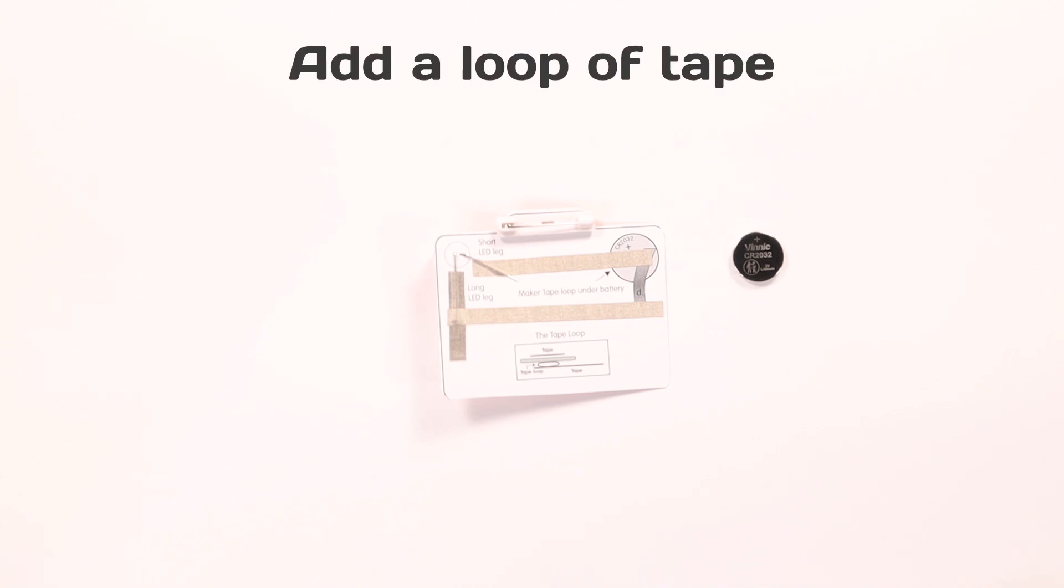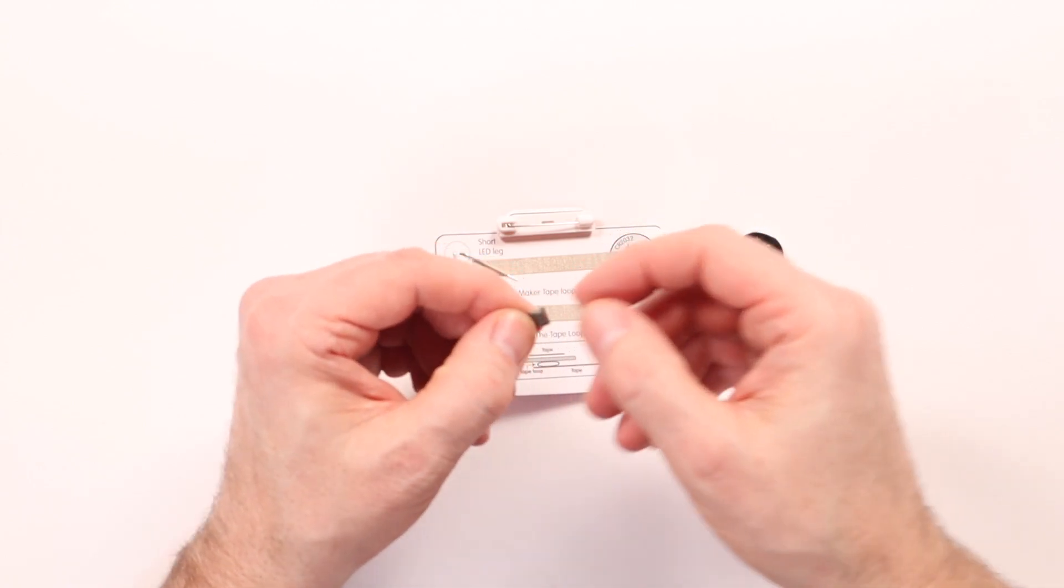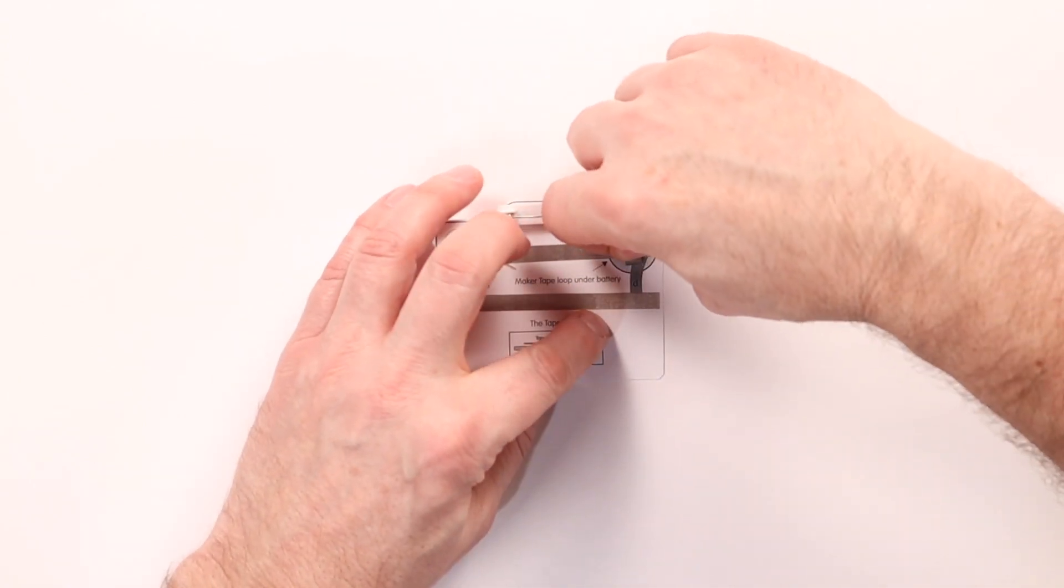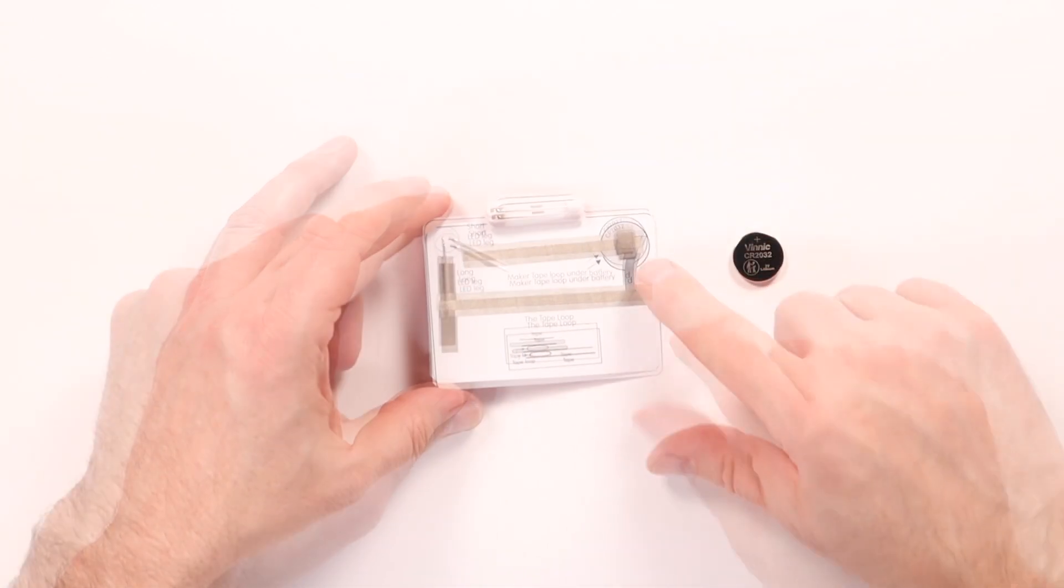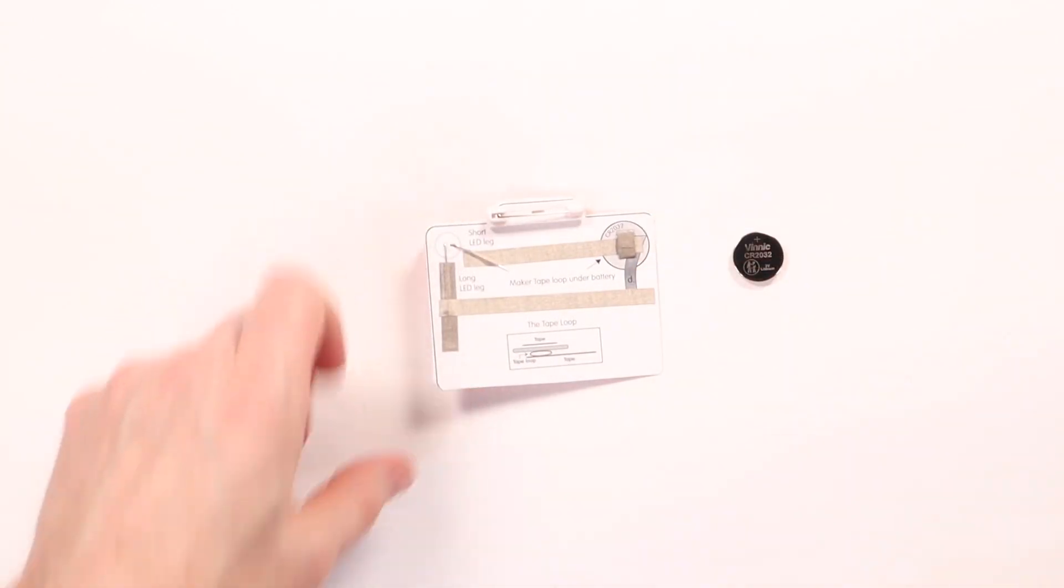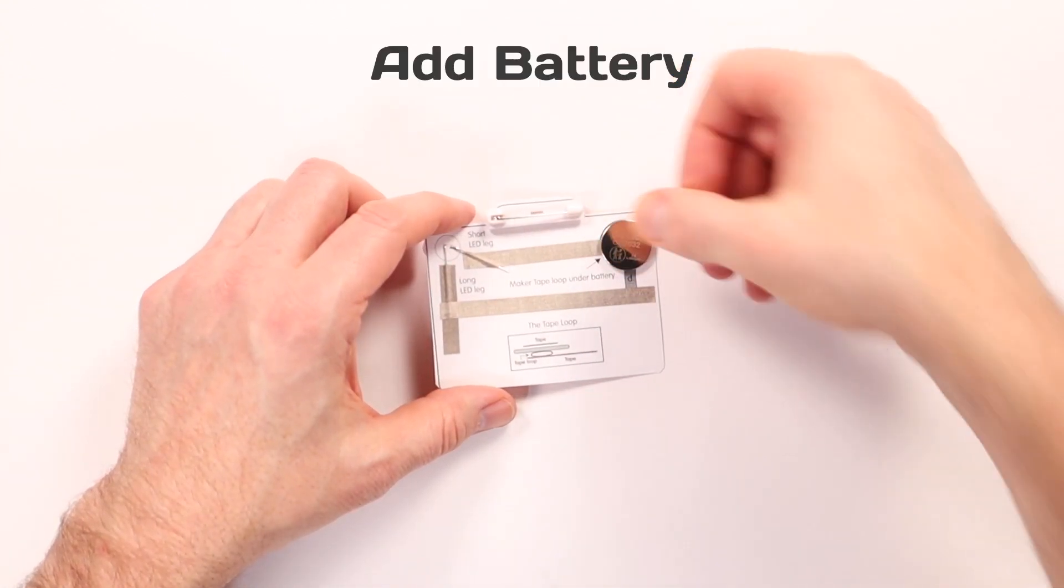Next we're going to add a tape loop. This is a small piece of maker tape. Fold it over on itself so it's sticky on the top and bottom. We're going to stick that down there. You'll note that it's not too large of a piece. It needs to fit fully under the battery. We're going to stick our battery then right on top of there.